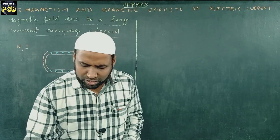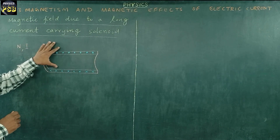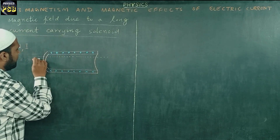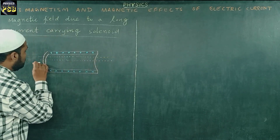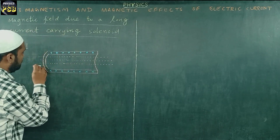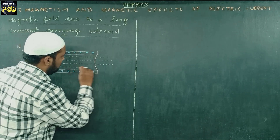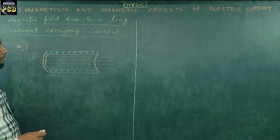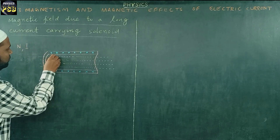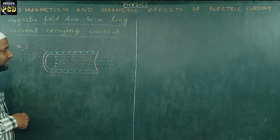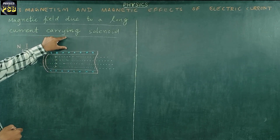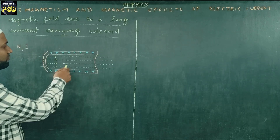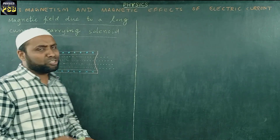Solenoids are used to produce uniform magnetic field. We know uniform magnetic field is one which has magnetic field lines parallel to each other. These parallel lines represent the uniform magnetic field. Along the axis, uniform magnetic field flows. Whereas outside — at the upper end or lower end — you will not find any magnetic field. The magnetic field outside the current carrying solenoid is zero, whereas the magnetic field is maximum and uniform along the axis of the solenoid.